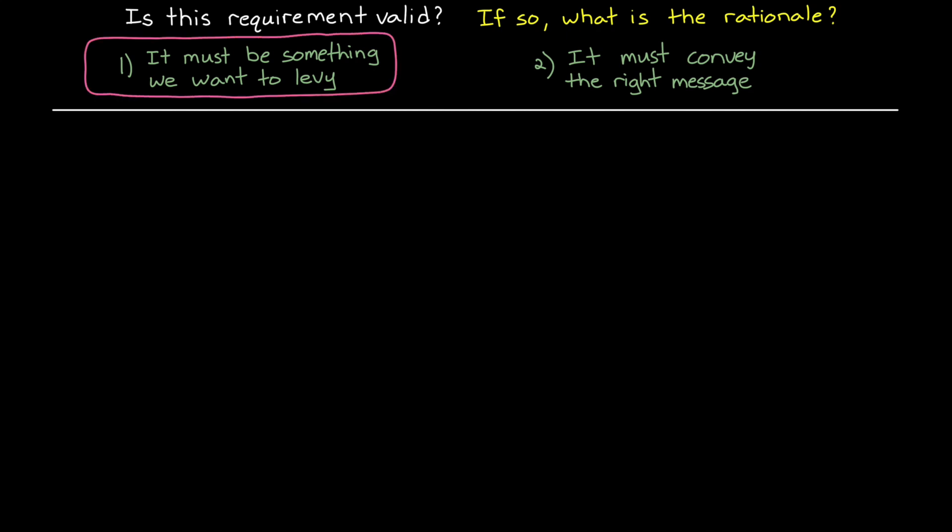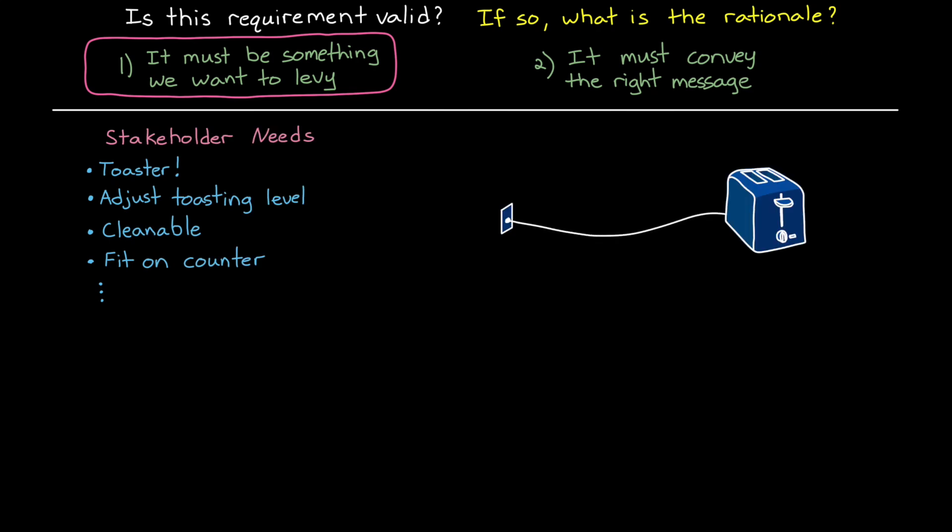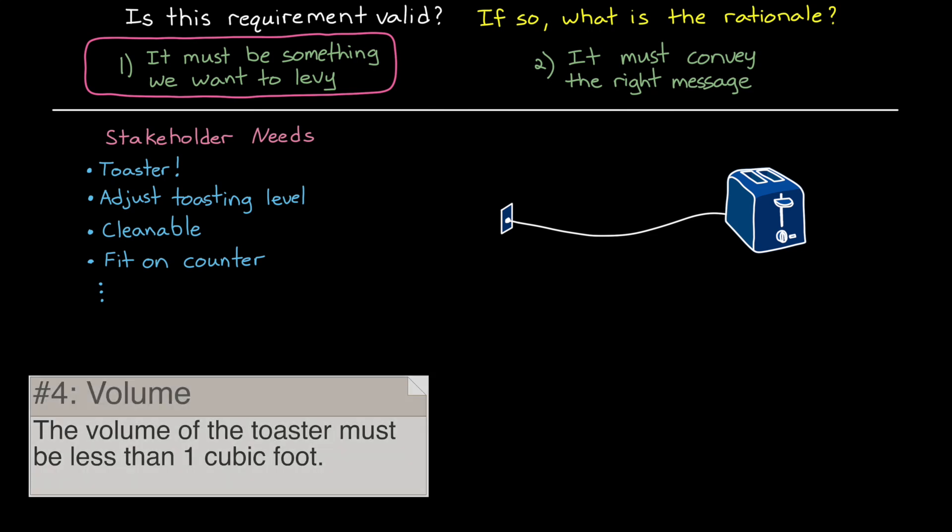We need to make sure that we are designing and building the right thing, the thing that the stakeholder actually wants. Therefore, the requirements have to specify needs that help achieve the end goals. For example, a good requirement for a toaster might be that the volume of the toaster must be less than one cubic foot. And this is valid because we can trace it back to a stakeholder need that says that it has to fit on a standard kitchen countertop. Therefore, we feel pretty good about constraining the design to this size.